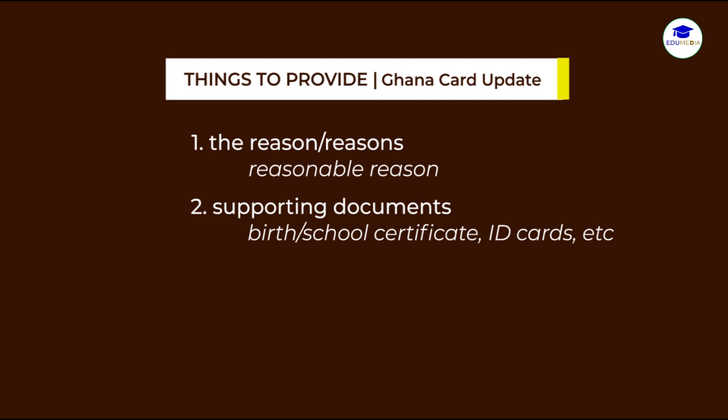The third item you will also need is a Gazette notification. For some errors, you will need a Gazette notification to make these changes legal. What I'm going to do now is present to you three instances where an applicant would like to update, correct, or change their names on the Ghana Card, and the procedure for each of them. I will present these scenarios and tell you the information and documents you need to get ready before going to the NIA office for the correction.